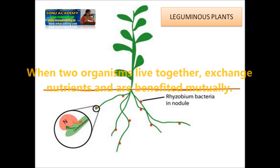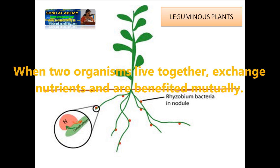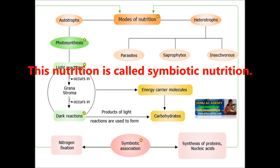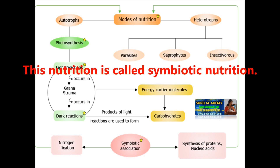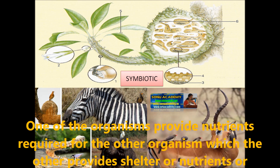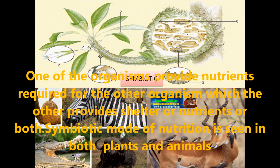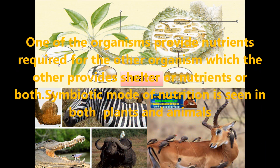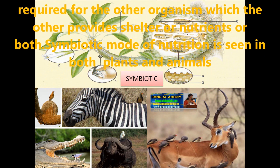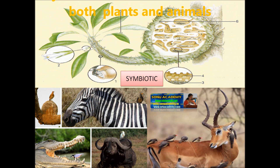When two organisms live together, exchange nutrients, and are benefited mutually, this type of nutrition is called symbiotic nutrition. One organism provides nutrients required for the other organism, while the other provides shelter or nutrients or both. Symbiotic mode of nutrition is seen in both plants and animals.